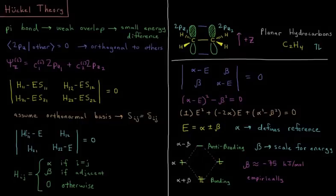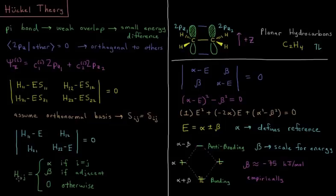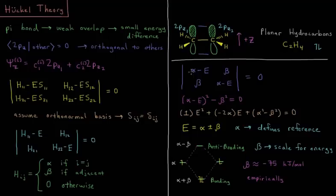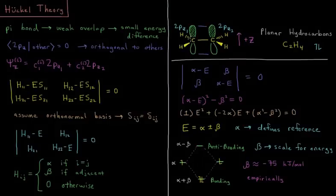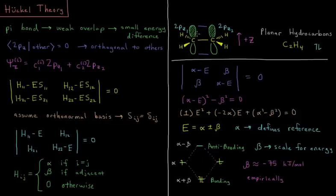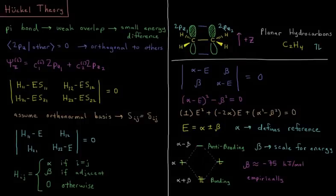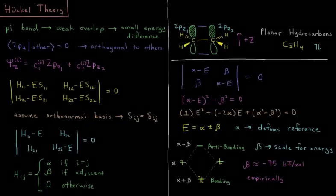Huckel theory is going to make some more assumptions and define specific values for each of these Hamiltonian matrix elements. So HIJ, if I equals J, it's going to be defined as a quantity called alpha. Alpha is the energy of kind of a pz orbital by itself. We have beta if they are adjacent to one another. Beta is the coupling between adjacent pz orbitals in our molecule. And if they're not adjacent pi orbitals next to one another, we're going to give it a 0. So for the case of ethene, C2H4...